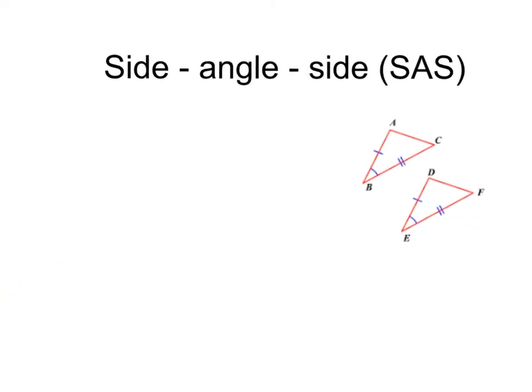Next up, we've got our side-angle-side congruence theorem. Notice here we've got a side right next to an angle right next to another side that's congruent with this side, this angle, and this side. When this is the case, when you have side-angle-side congruence, then again, we know these two triangles are congruent.